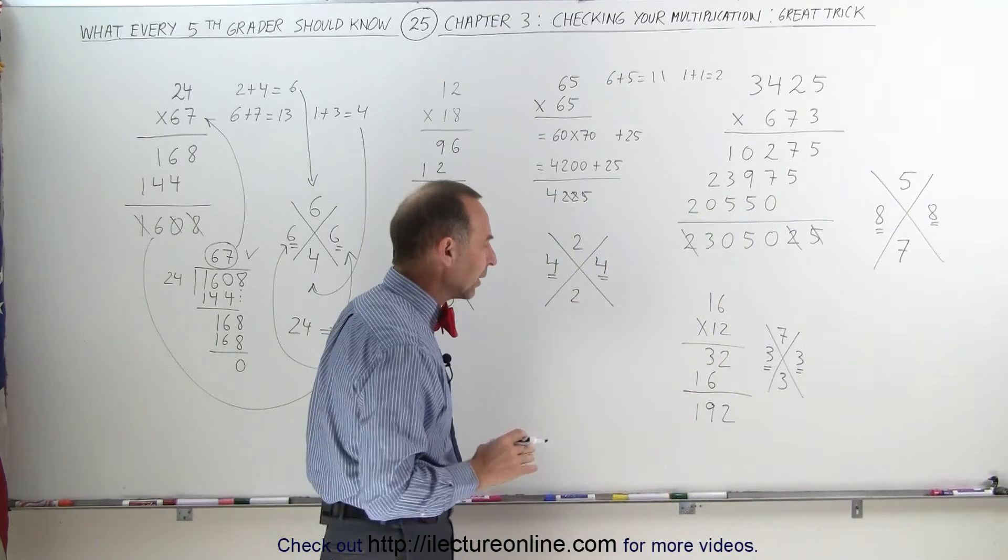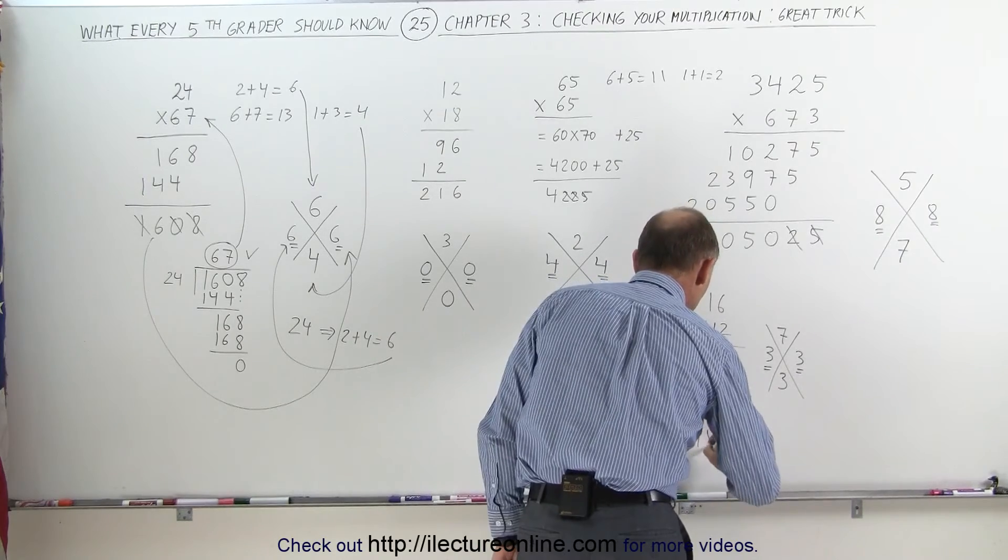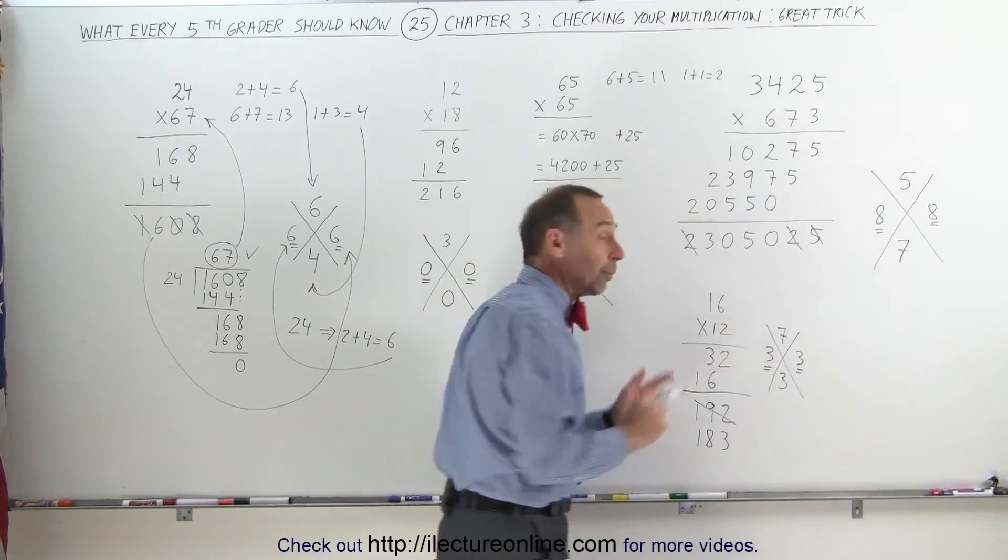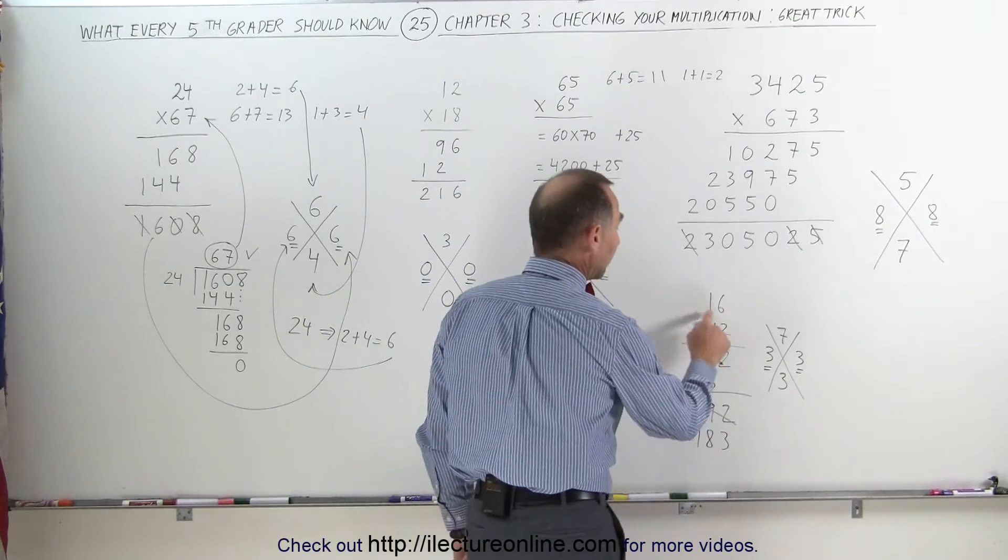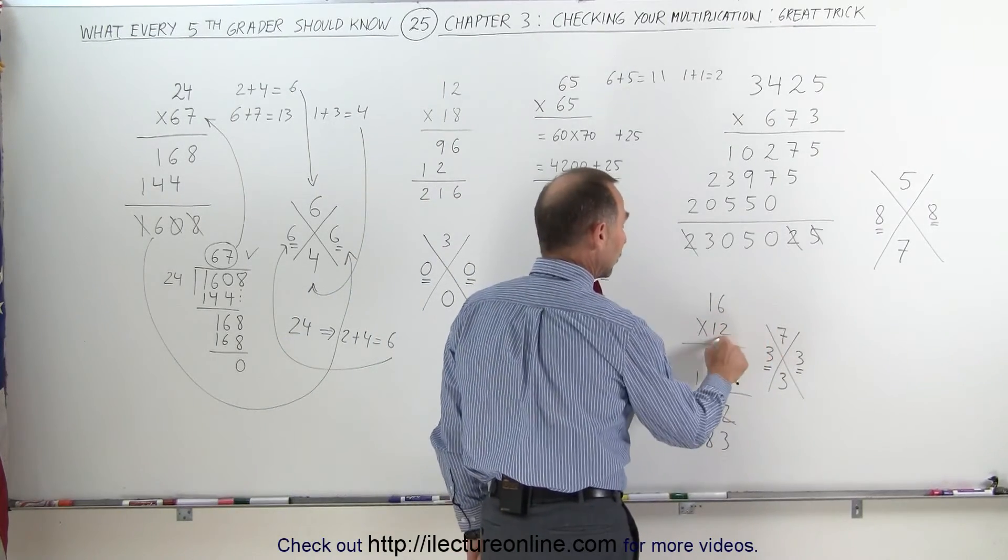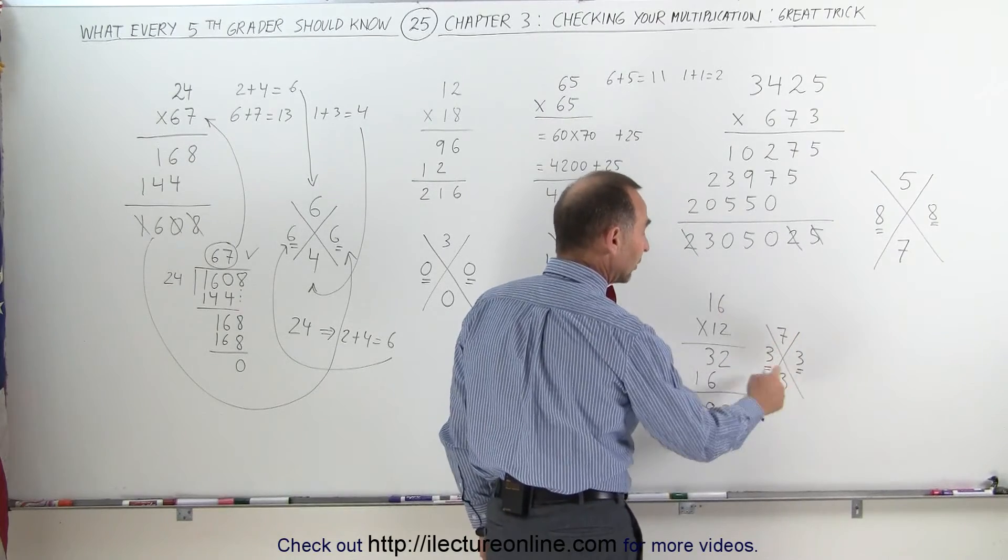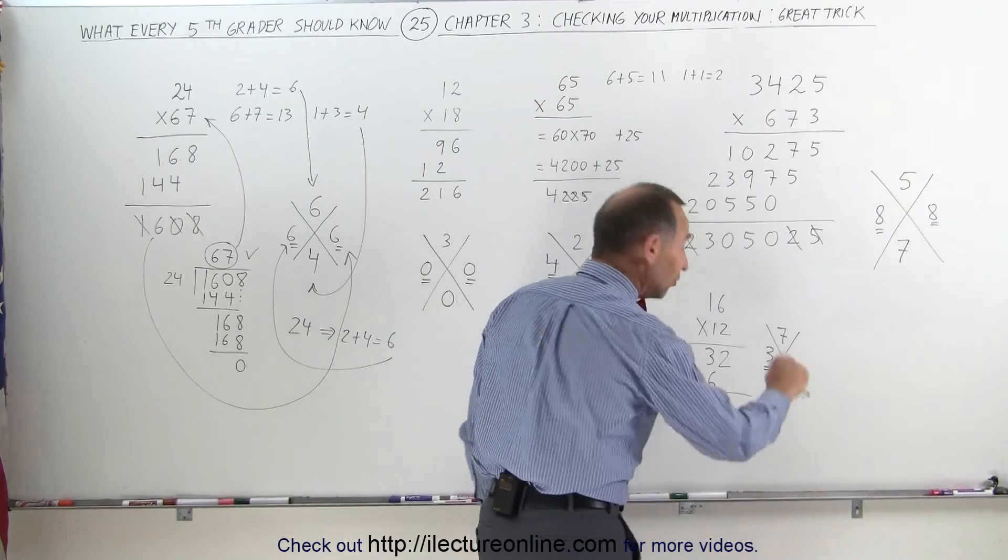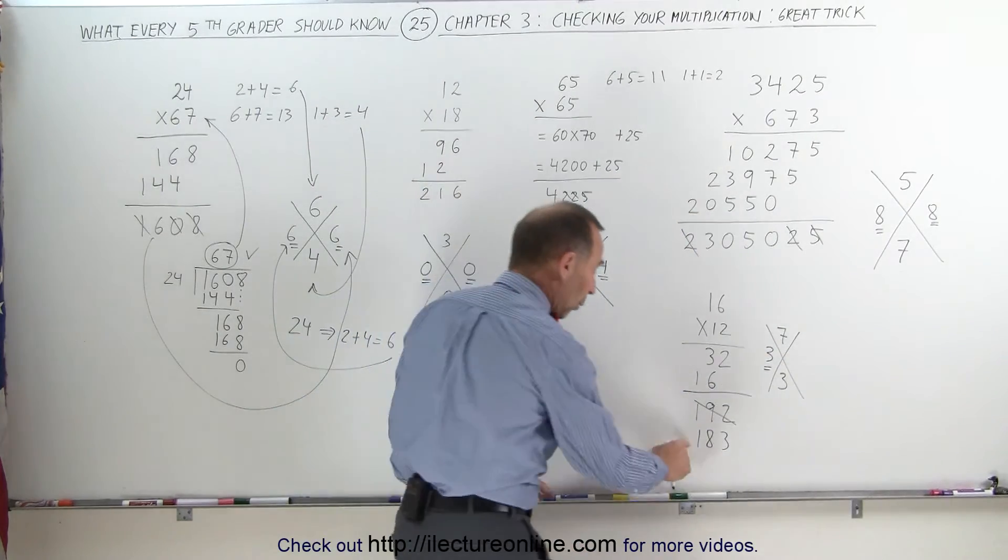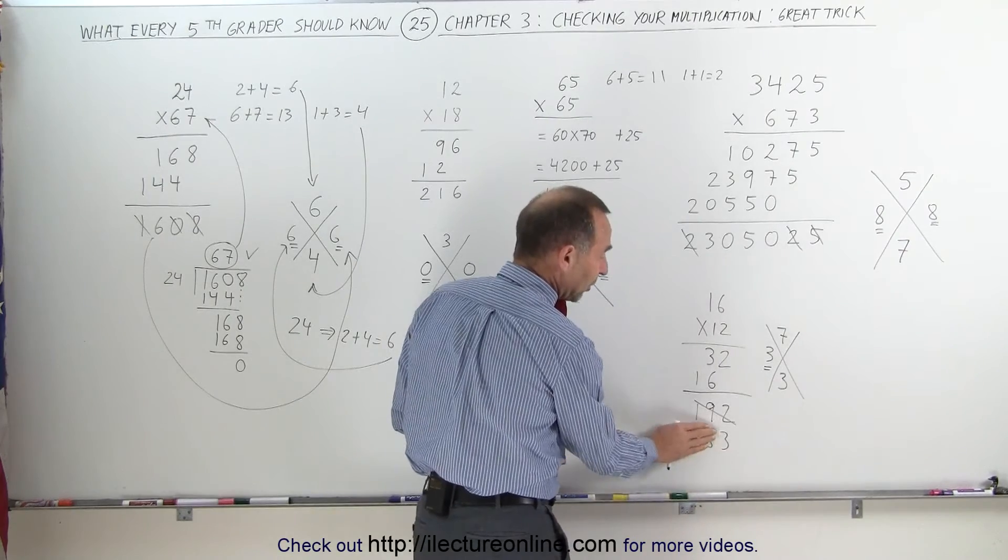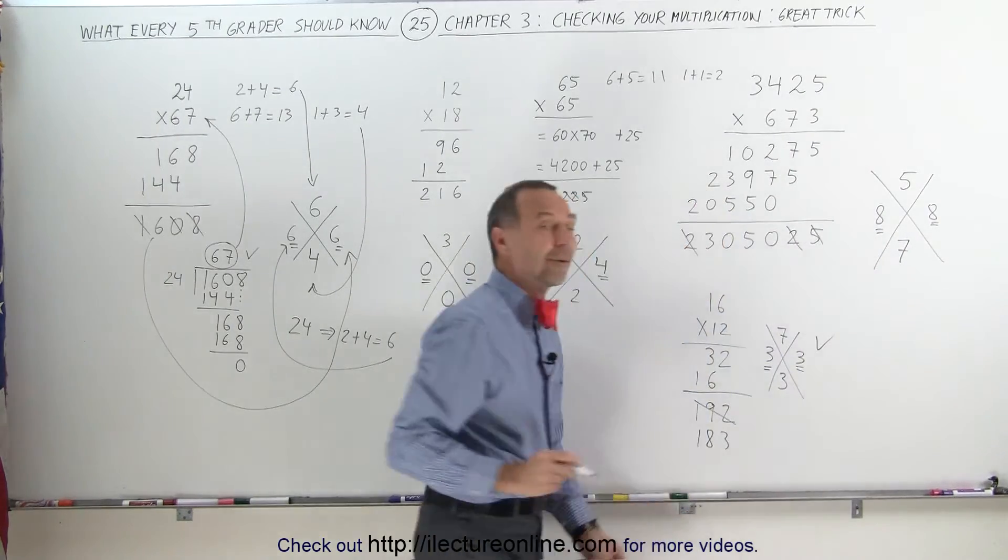But what if we made a mistake? What if we said, oh, my answer was 183. I just made a mistake, and instead I wrote 183. Again, you would do the same thing. You add the 1 and the 6 gives you a 7. The 1 and the 2 gives you a 3. 3 times 7 is 21. Add the 2 and the 1 together, you get a 3. And now, of course, you would add these numbers together, and you'd say, well, I hope they add up to a 3. Well, a 1 plus 8, that's a 9 that disappears. You're left with a 3. You write down the 3. You go, ah, my answer is correct.